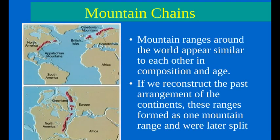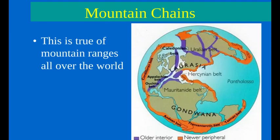Similarities across mountain ranges — in the form of rock ages, rock types and sediment, formation types, and erosion — can indicate which ranges used to be connected but are now found on completely different continents. For example, the Caledonian and Appalachian mountain ranges appear similar to each other in composition and age. If we reconstruct the past arrangement of the continents, these ranges formed one mountain range that were later split apart. In this image, we see older mountain ranges in purple and younger mountain ranges in orange.